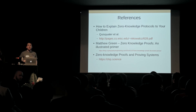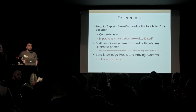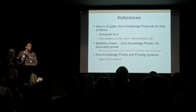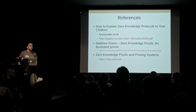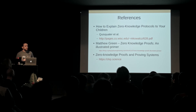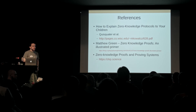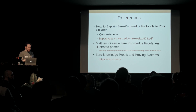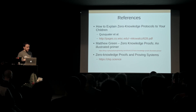Does anybody have any questions? When you said the proof was probabilistic — 2 to the 256 or whatever the exact number — rather than absolute, is that always the case with zero-knowledge proofs, or can you get ones that are axiomatically true?